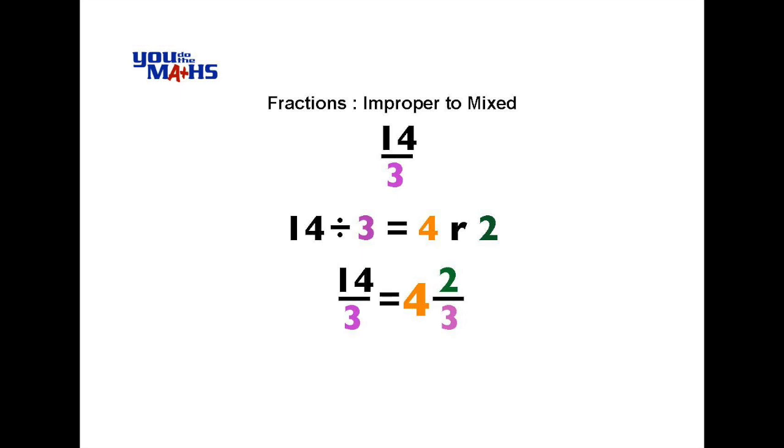So 14 over 3 as an improper fraction is 4 and 2 thirds as a mixed numeral.